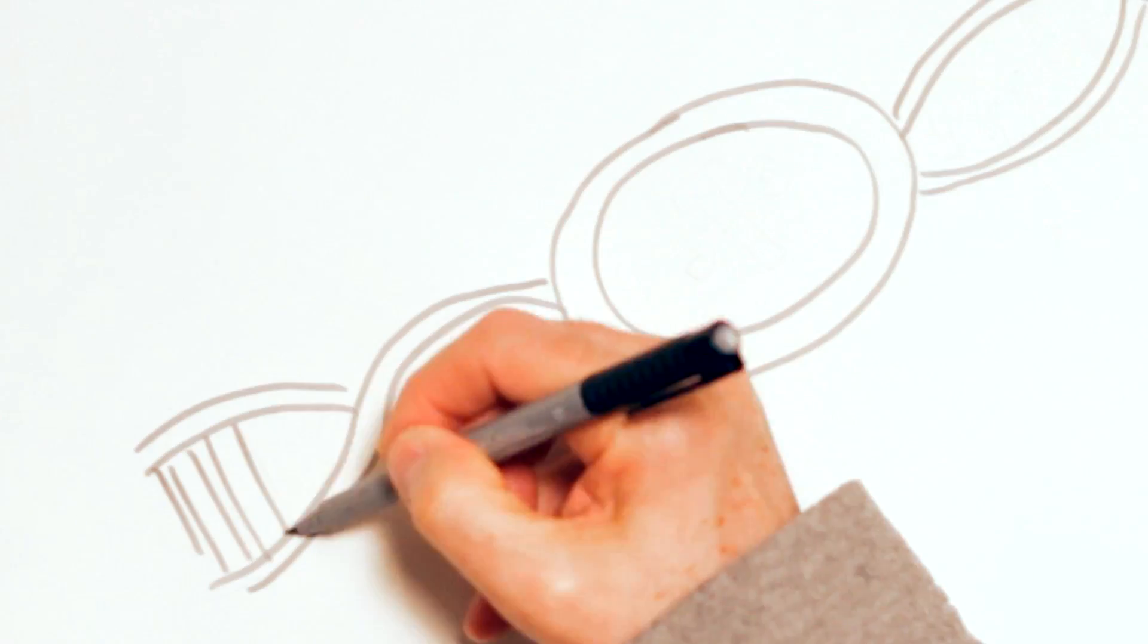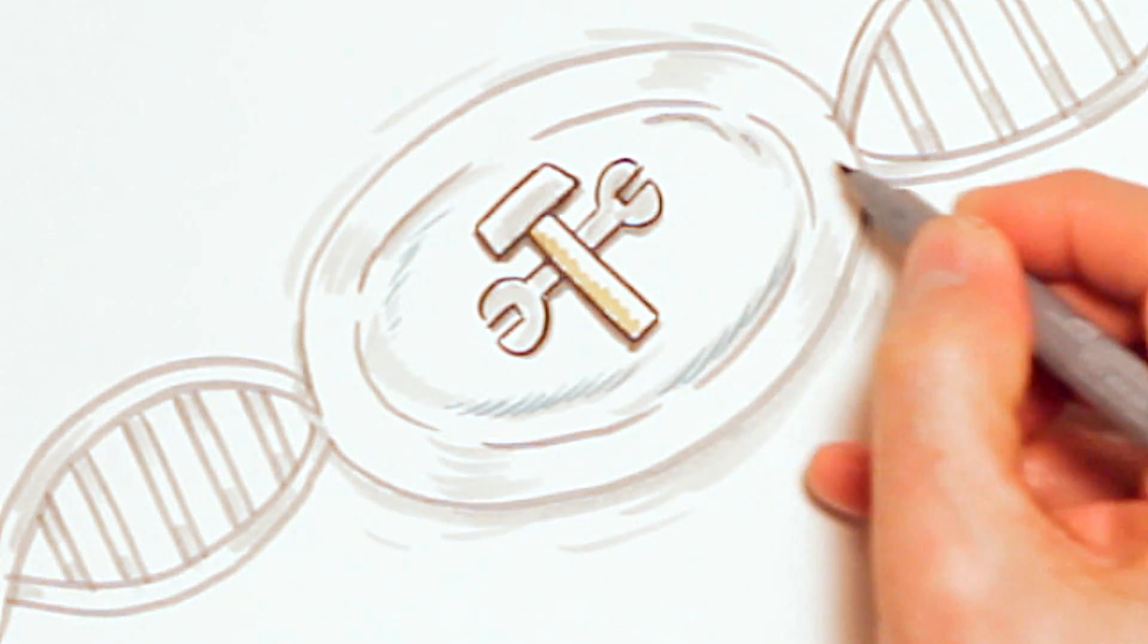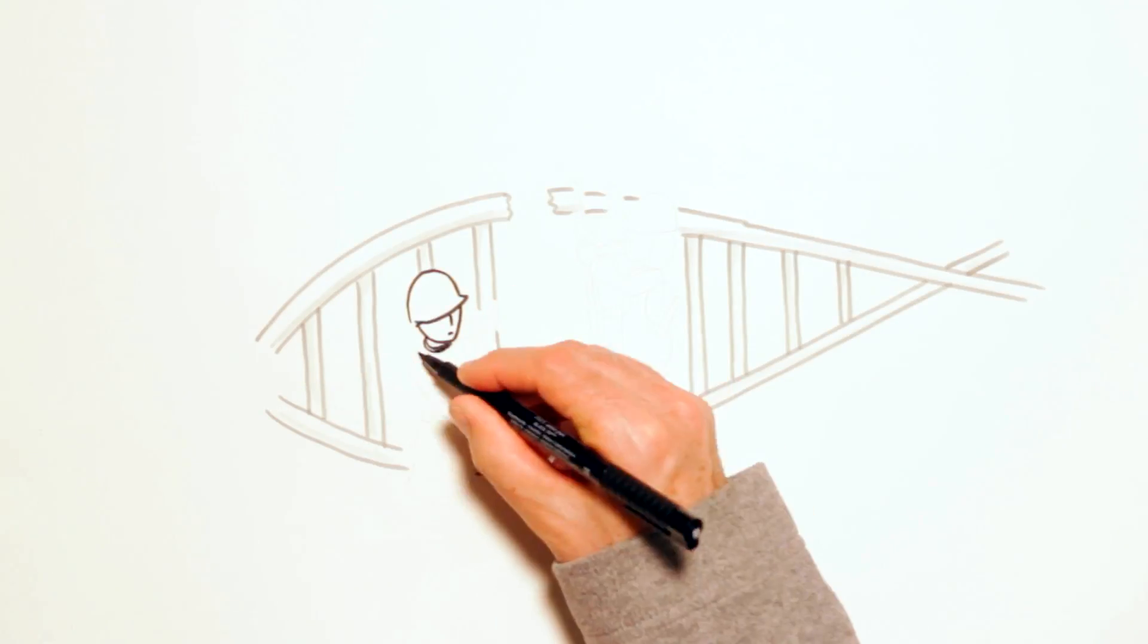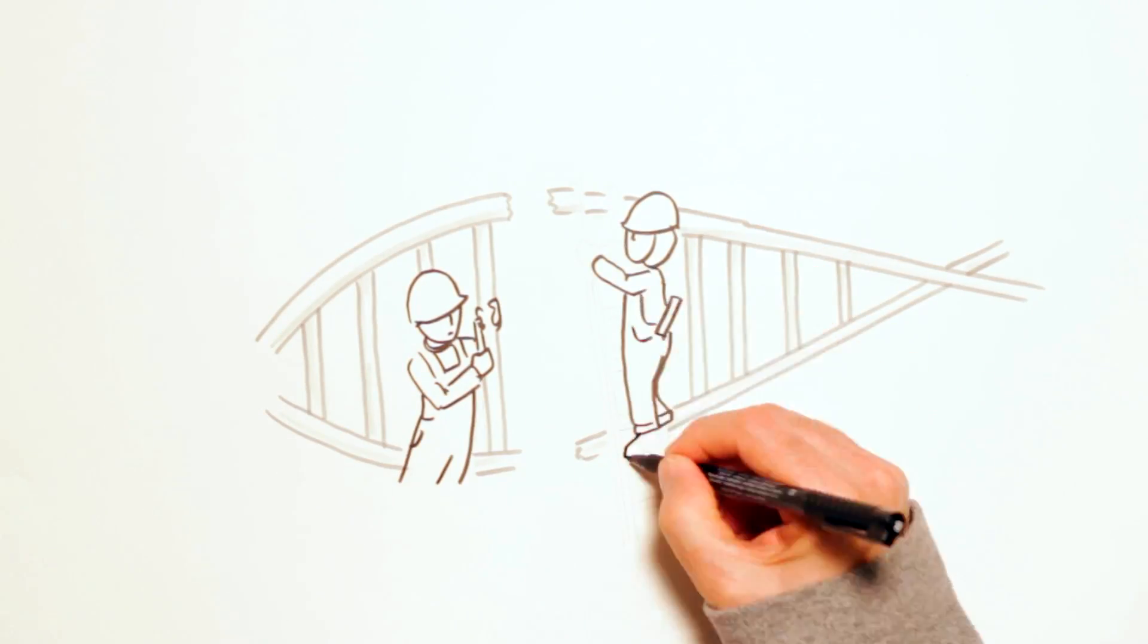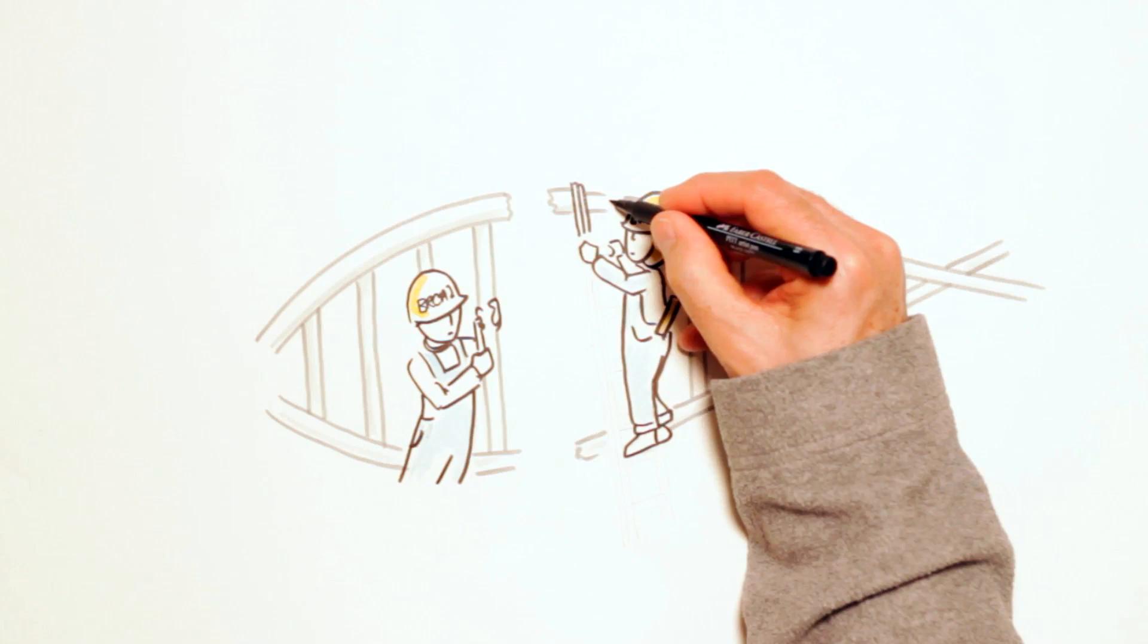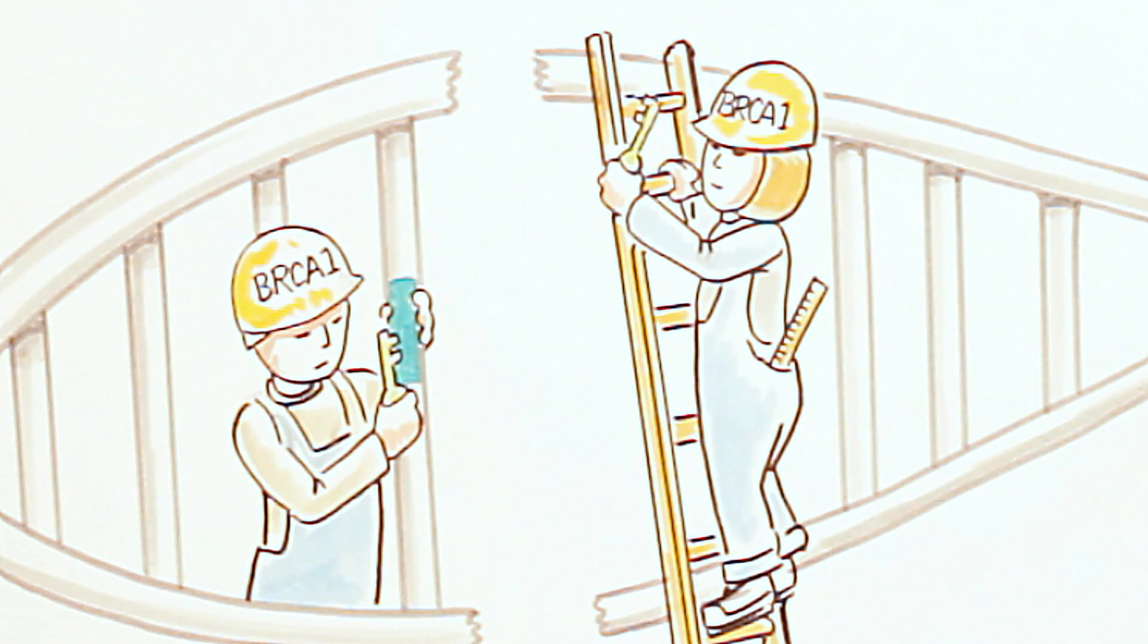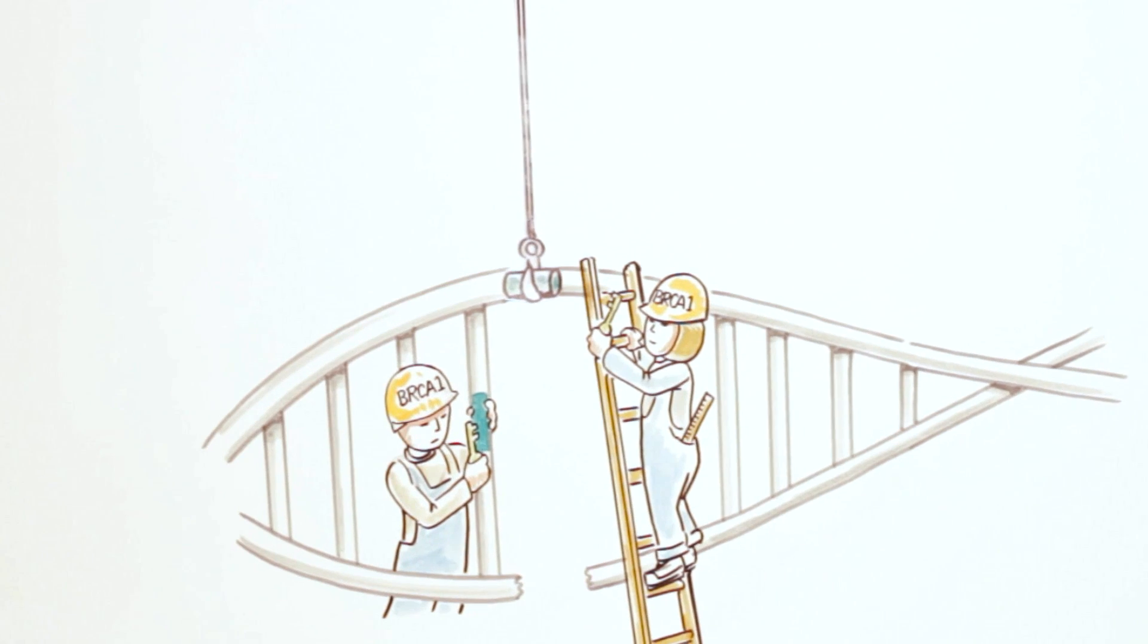Fortunately, cells have several mechanisms for making repairs. When both strands of the DNA molecule are damaged, normal cells use genes known as BRCA1 and BRCA2 to create proteins that help repair the breaks.